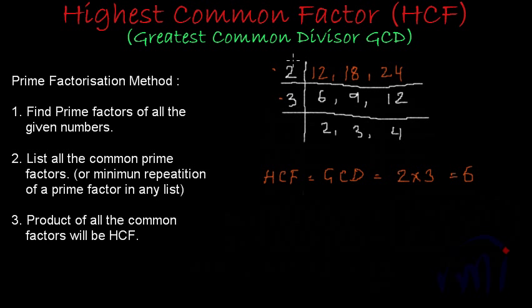Here also we are actually finding the prime factors. Using this prime factorization method in this way, we are directly finding the common prime factors and avoiding factors which are not common to other numbers. This is one more method of finding the highest common factor using prime factorization. In the next video, we are going to learn the division method to find HCF or GCD, which is very useful for comparatively larger numbers. Bye-bye till then.